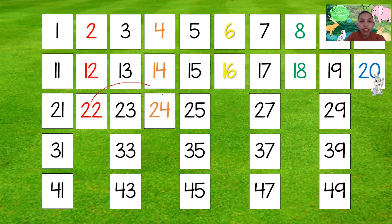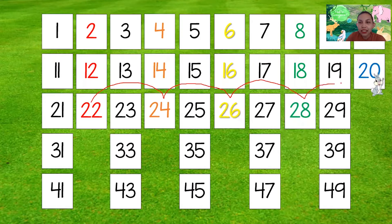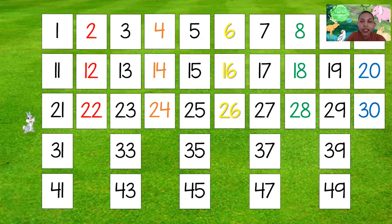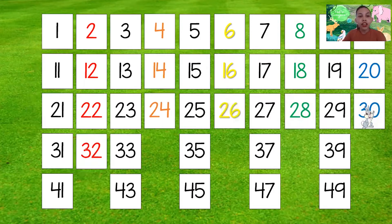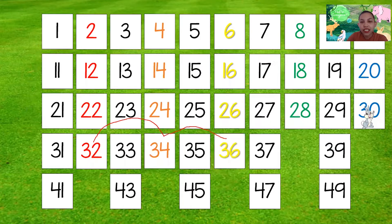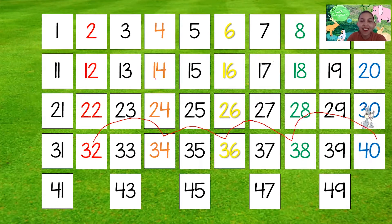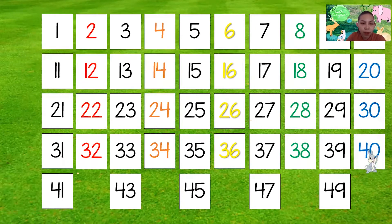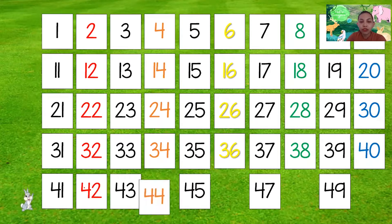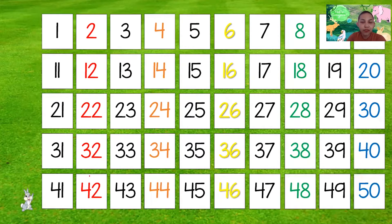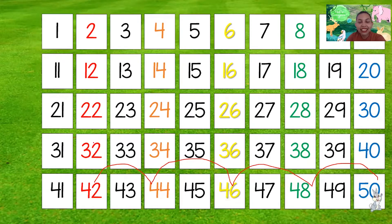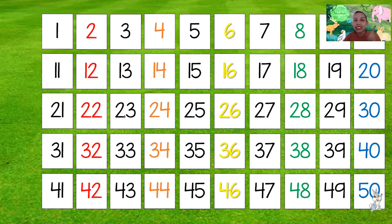How about this one? 22, 24, 26, 28, and 30. Go bunny! 22, 24, 26, 28, and 30 — good job! Now, 32, 34, 36, 38, and 40 — good job! And 42, 44, 46, 48, and 50! That's right! And that's how you skip count by 2! Good job, everybody!